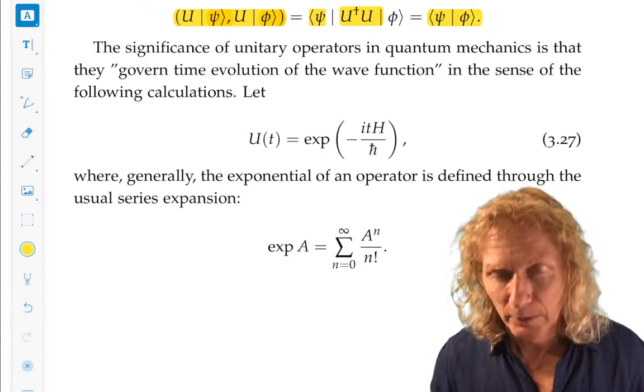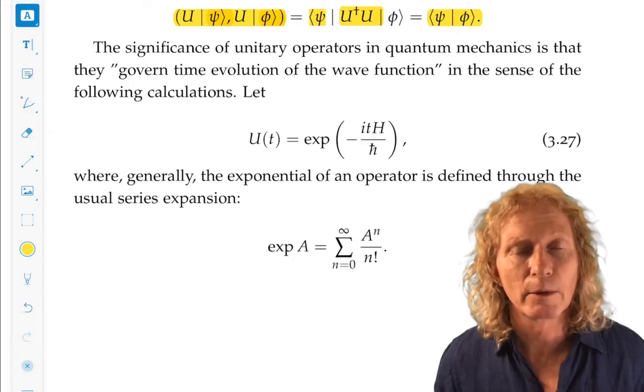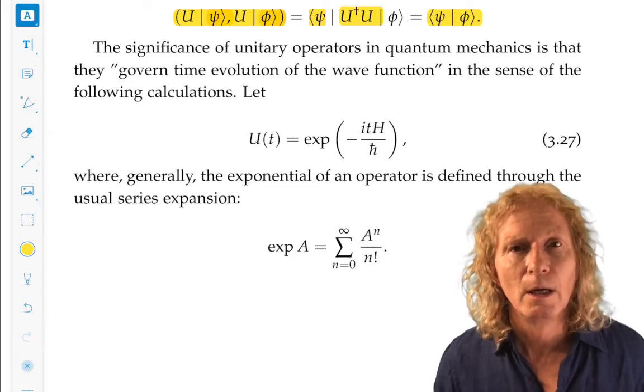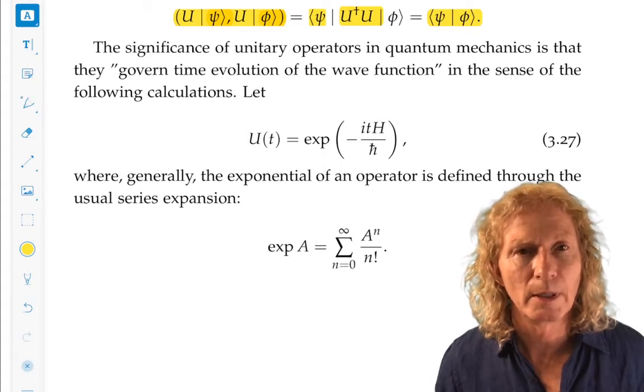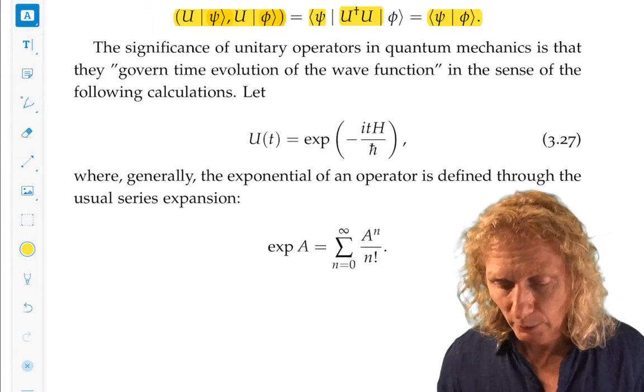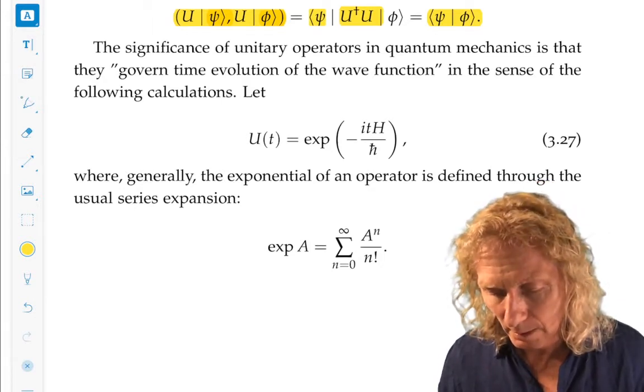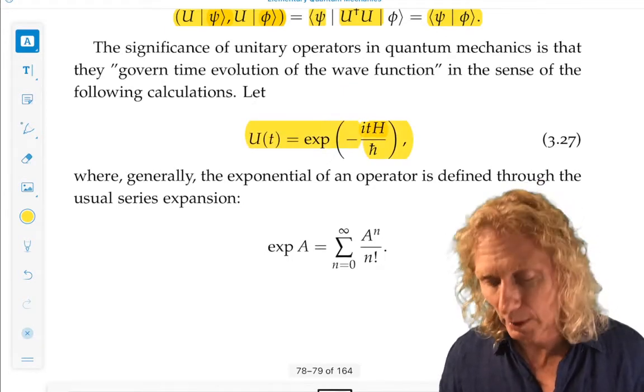Now the significance of unitary operators in quantum mechanics is that they govern the time evolution of the wave function in Schrodinger's equation, and we're going to show what that means right now. So first of all, we're going to define this unitary operator. Why is it unitary? I'm getting a bit ahead of myself.